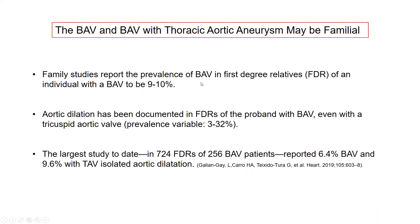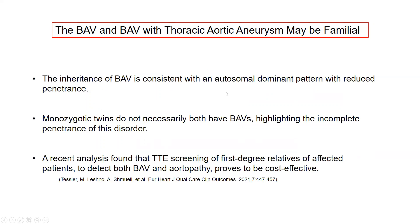In family studies, the prevalence of bicuspid valve in the first-degree relative of an individual with a BAV is up to 9–10%. Aortic enlargement has been documented in first-degree relatives of the proband with bicuspid valve, even when the relative's valve is tricuspid. The largest study to date, from the Barcelona group, examined 722 first-degree relatives of 256 bicuspid valve patients, reporting a 6% incidence of bicuspid valve and almost 10% with isolated aortic dilation. This inheritance pattern is consistent with autosomal dominant with reduced penetrance, though monozygotic twins do not necessarily both have bicuspid valves, highlighting incomplete penetrance. A recent analysis found that echocardiographic screening of first-degree relatives is cost-effective.